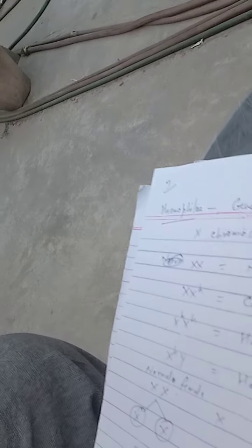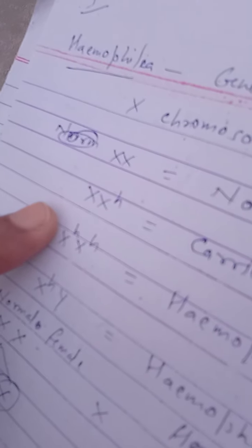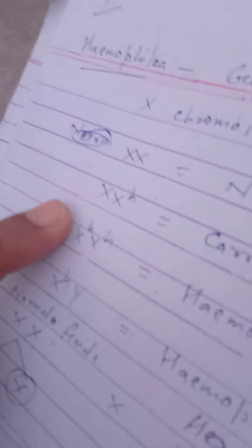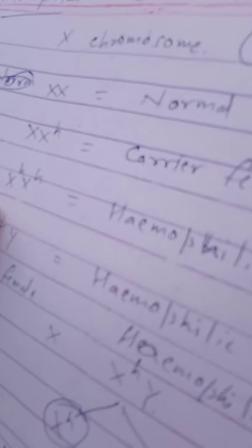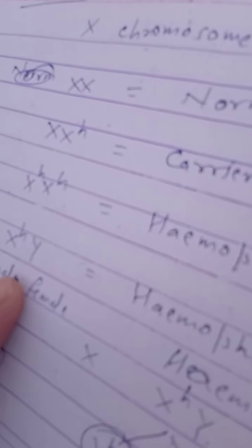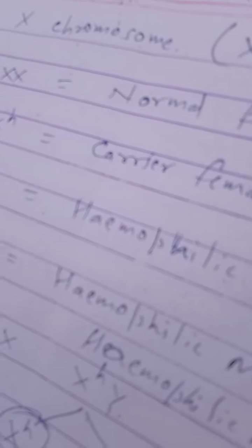Similarly, the hemophilic gene is also present on the X chromosome. If a female has XX chromosomes where only one X bears the hemophilic gene, the disease does not appear in the female, but she acts as a carrier. If both X chromosomes of the female bear the hemophilic gene, a hemophilic female is produced. If only the X chromosome bears the hemophilic gene in a male (XY), the disease is expressed.